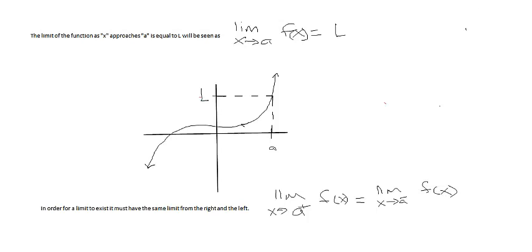The idea is that as you approach a on the function, we want to know what we're getting close to. The definition says 'approaches' — we want to know what it's getting close to, not exactly what it is. So don't confuse it with the function value at point a. We're looking at what it's approaching.